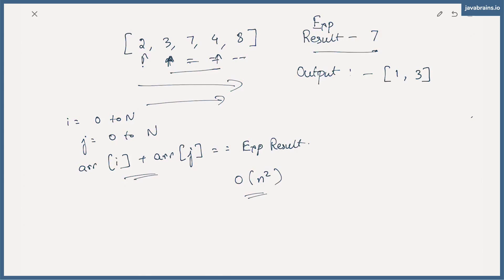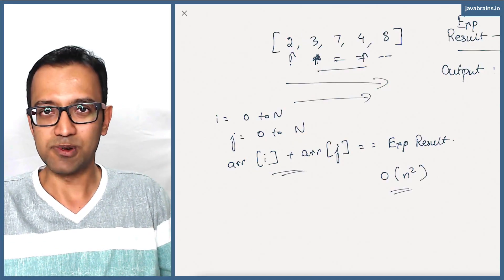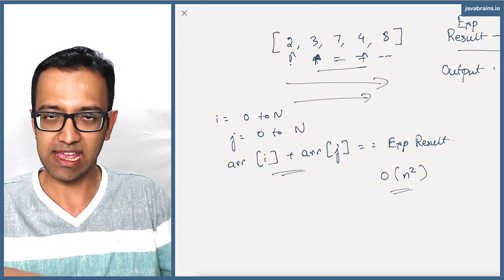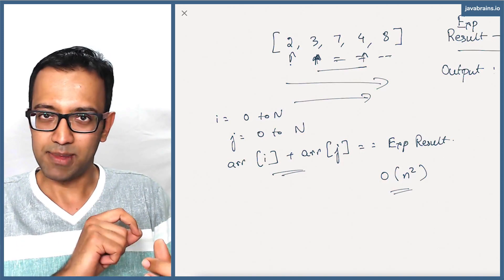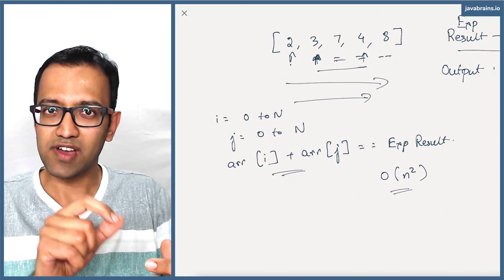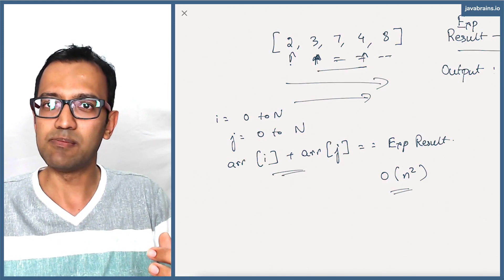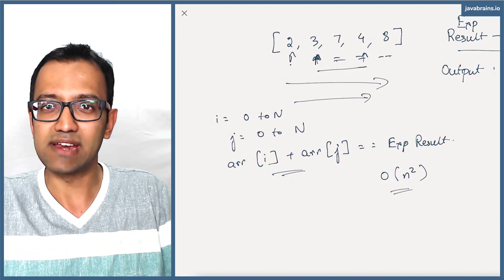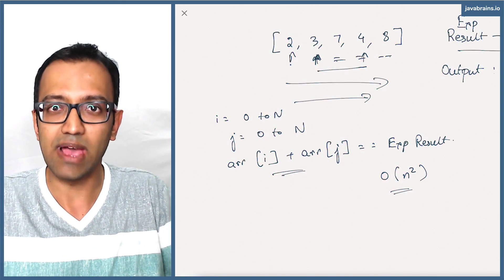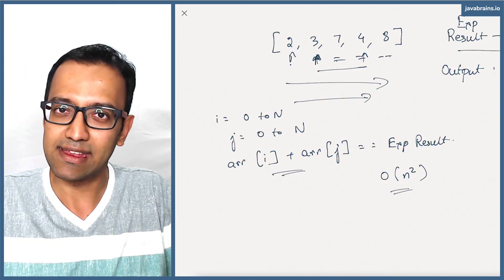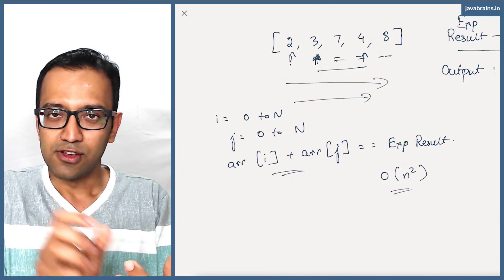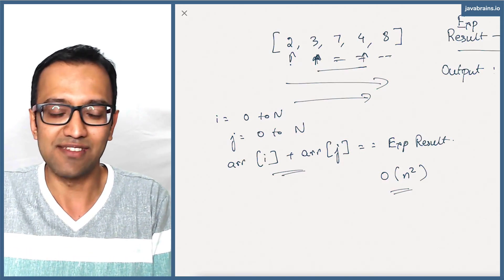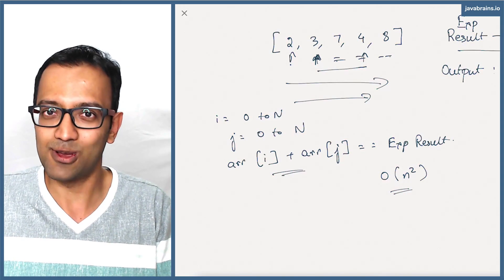There is a better way. The brute force approach had two nested loops — the outer loop looked at one element, and then the inner loop compared that element against each of the other elements to see if the sum resulted in the expected result. The problem is that since we are looking at an array, given one value, to find if that delta exists in the array you have to loop through it, because the way arrays work you're going to have that positional way of looking up things.